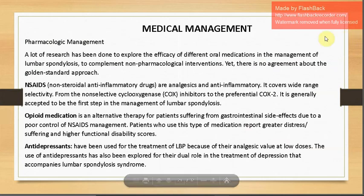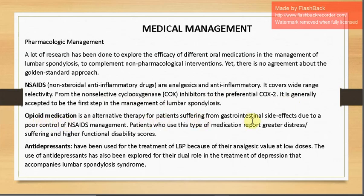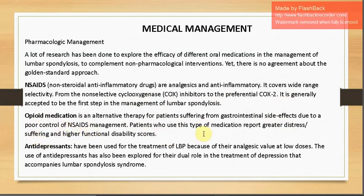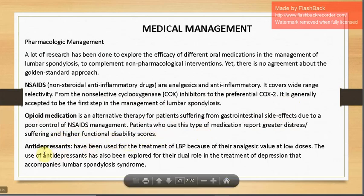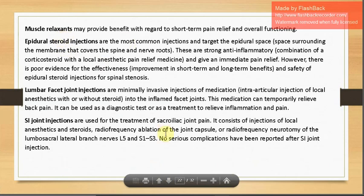Pharmacological management mainly uses non-steroidal anti-inflammatory drugs (NSAIDs), covering a wide range from non-selective cyclooxygenase inhibitors to preferential COX-2 inhibitors. Opioid medication is an alternative for patients suffering GI side effects from poor NSAID control — though patients using opioids report greater distress and higher functional health disability scores. Antidepressants are used at low doses for their analgesic properties and dual role in treating depression accompanying lumbar spondylosis syndrome. Muscle relaxants may benefit short-term pain relief.